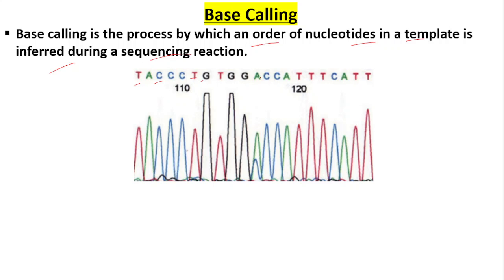This is called base calling, and each of these nucleotides has been assigned a different color shown in this graph here: T with red, A with green, C with blue, G with black.